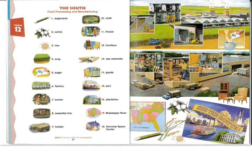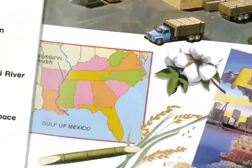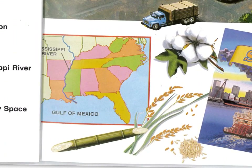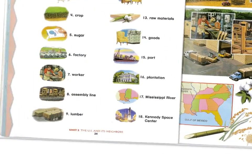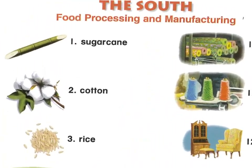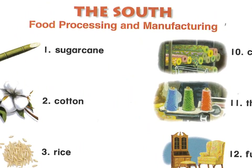Now we are looking at the regions of America, the United States of America — today we're looking at the South. The southern states — this is the historic South, the south that was involved in the Civil War in the 1860s. The South is known for food processing and manufacturing.